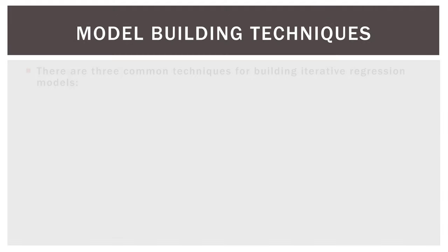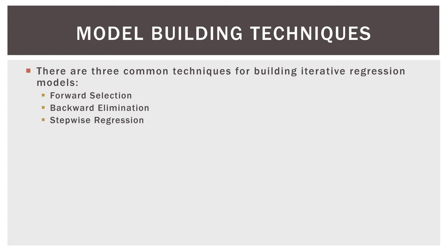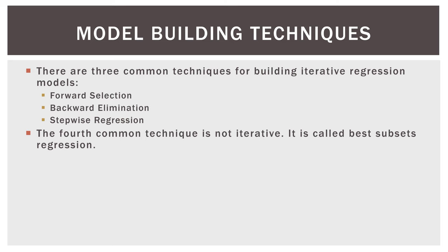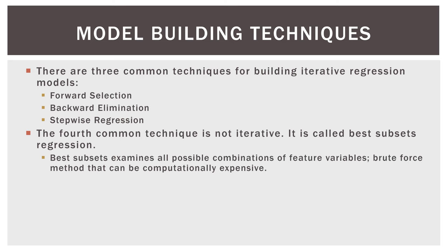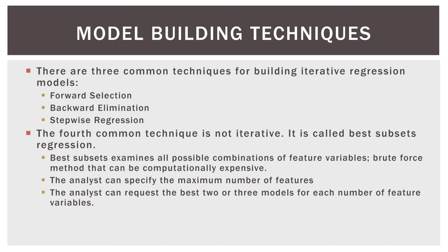Let's go ahead and dive in. There are three common techniques for building iterative regression models: forward selection, backward elimination, and stepwise regression. The fourth common technique is not iterative. It's called best subsets regression. Best subsets examines all possible combinations of feature variables. It's kind of a brute force method that can be computationally expensive. It's going to try every combination of every number of variables that you have. There can be hundreds and hundreds of different models, even for relatively small variable feature sets. The analyst can specify the maximum number of features, which can cut down on the output you receive. And the analyst can request the best two or three models for each number of feature variables.